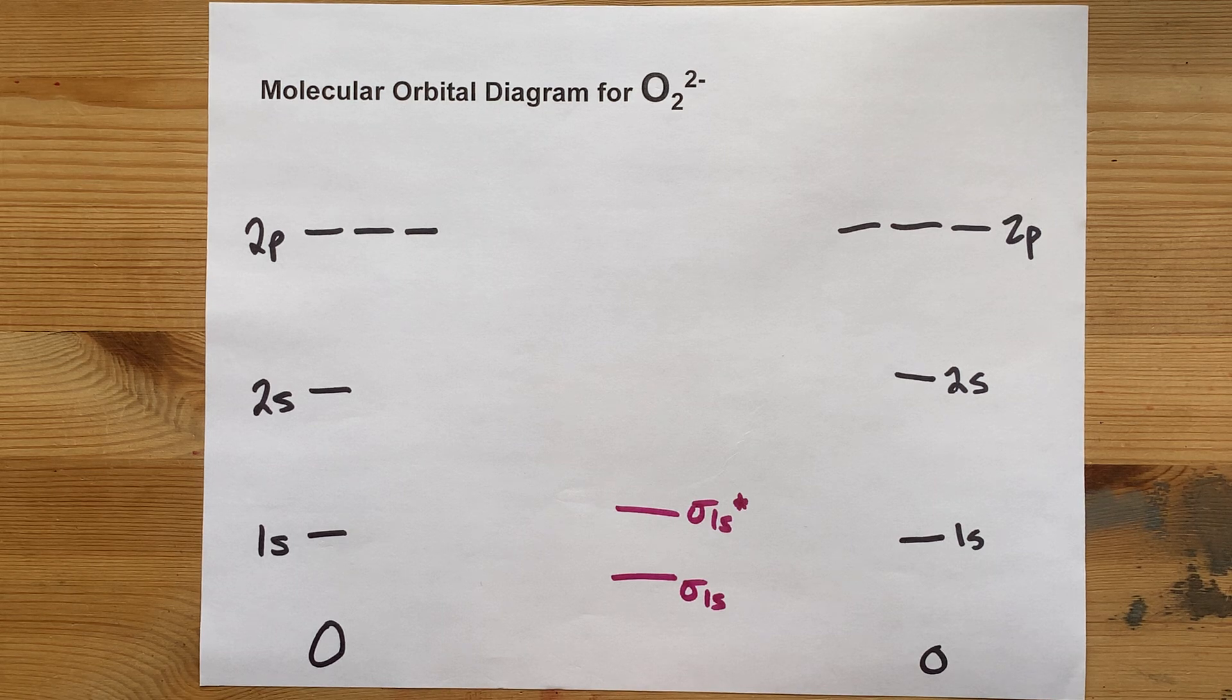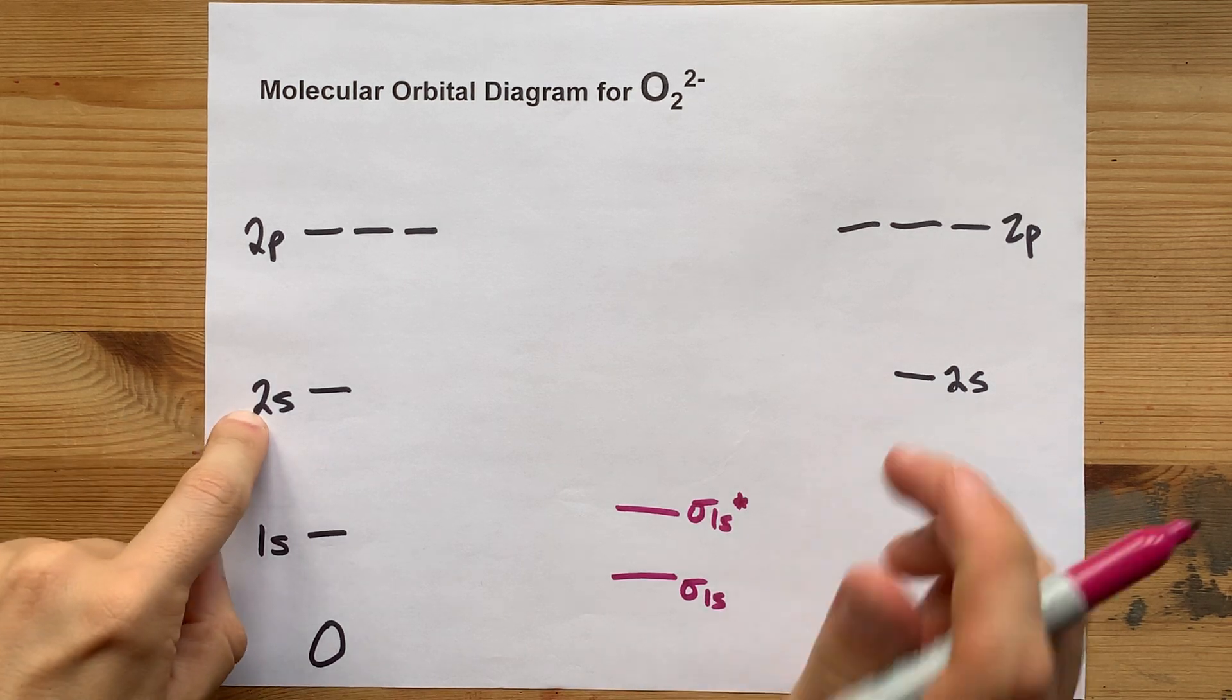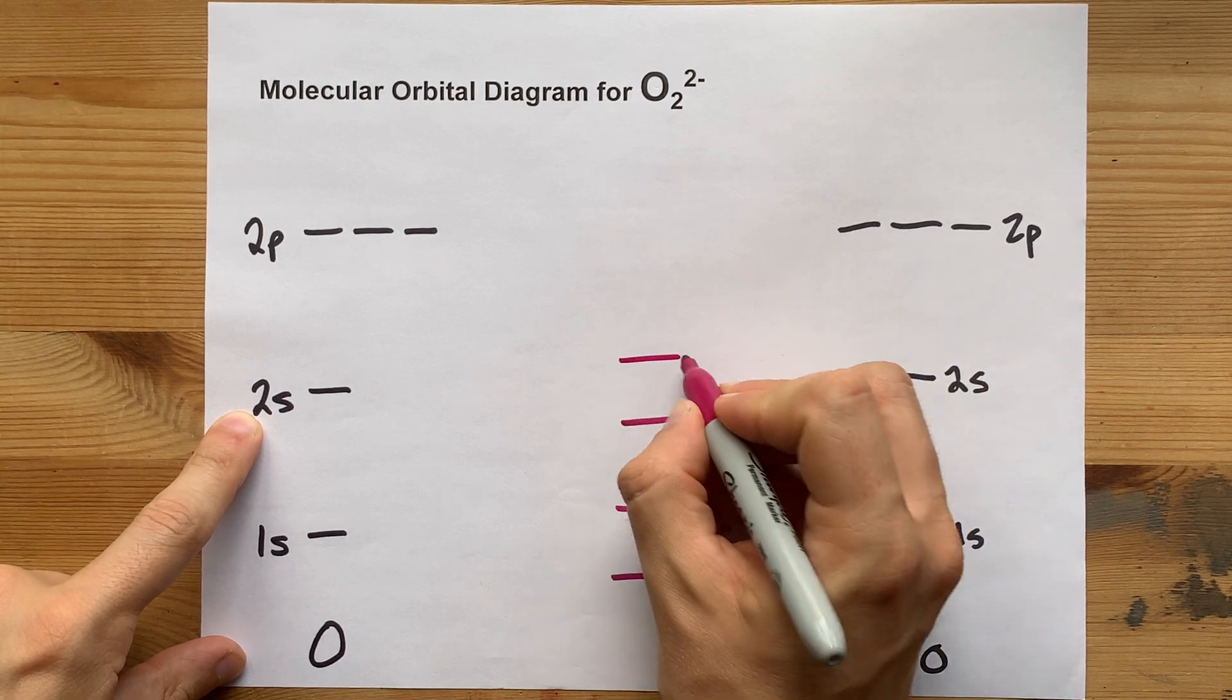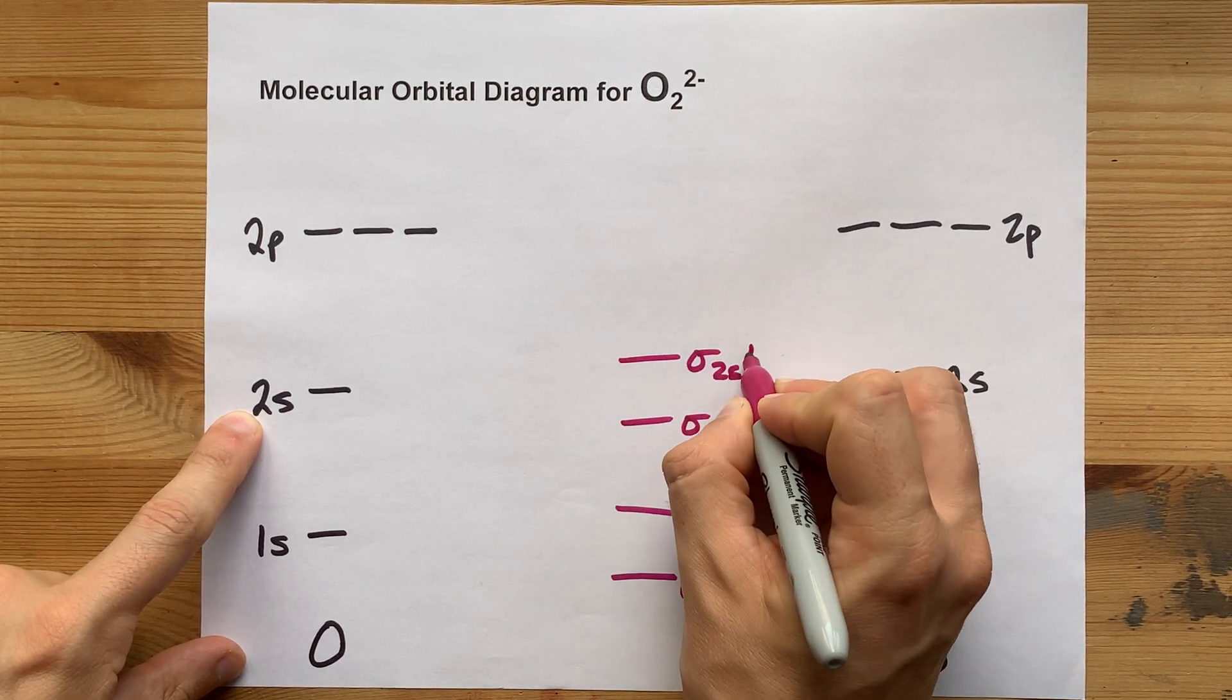I think I got a little lazy there. The 2s is overlapped to give you a sigma 2s bonding and sigma 2s antibonding.